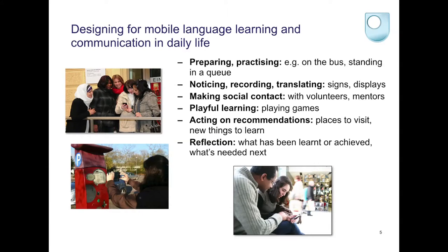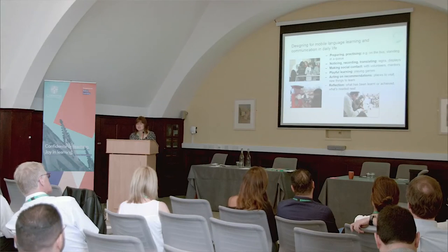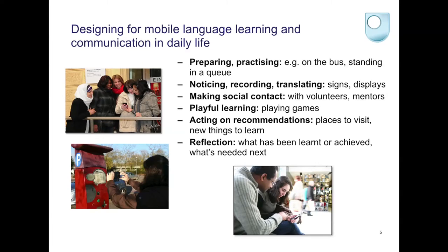Thinking about how we're going to support learners to take greater advantage of what's around them — we could give them some recommendations, for example, places to visit in the city, new things to learn. And then we want to also encourage them to reflect on what they've learned, what they've achieved, and what they might do next — tomorrow, the next week, the next month. So these are some of the key elements of the design for learning that we've been carrying out.